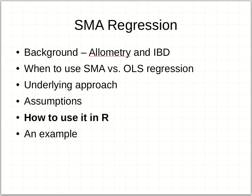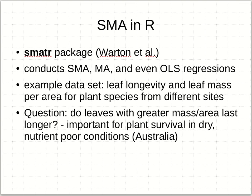So how do we actually do this in R? There's a nice package put together by the same people who wrote that paper, Warton et al., called SMATR — S-M-A-T-R. It conducts SMAs and another model called MAs, and you can even do standard OLS regressions with it. So if you wanted to, you could just use this SMATR package for all regressions — both ordinary least squares and SMA — from now on. Let me walk through an example so you can see how this works.